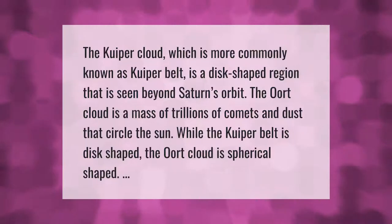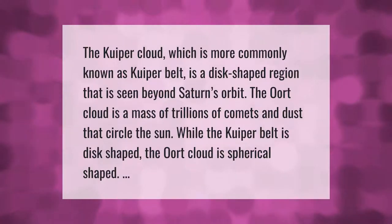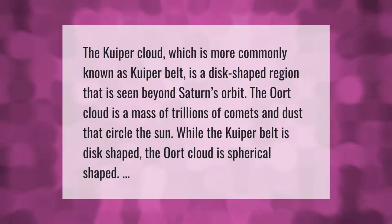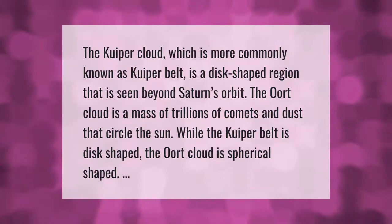The Kuiper Belt, also known as the Kuiper Cloud, is a disc-shaped region seen beyond Neptune's orbit. The Oort Cloud is a mass of trillions of comets and dust that circle the sun. While the Kuiper Belt is disc-shaped, the Oort Cloud is spherical in shape.